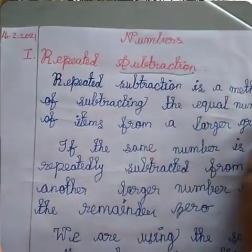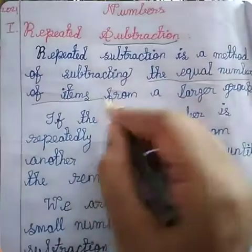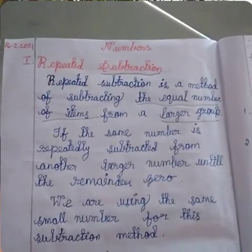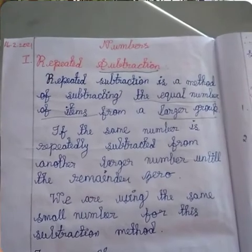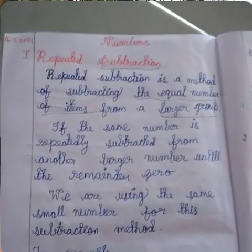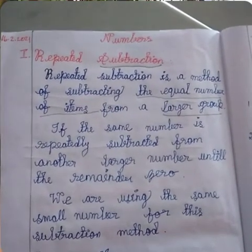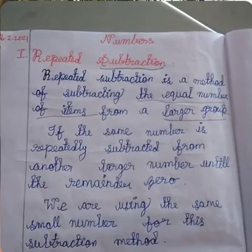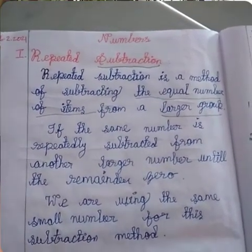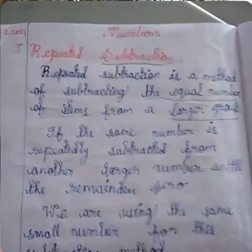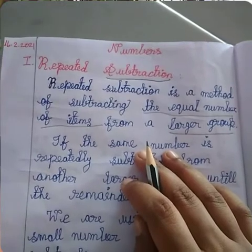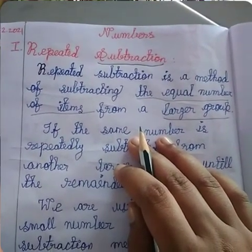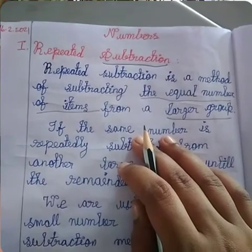Repeated subtraction means it is a method of subtracting an equal number of times from a larger group. For example, a larger number is given and you are going to subtract until you get zero. You are going to subtract the same small number from the big number until you get zero — until the remainder is zero. You have to get the remainder zero — then only the sum is finished.